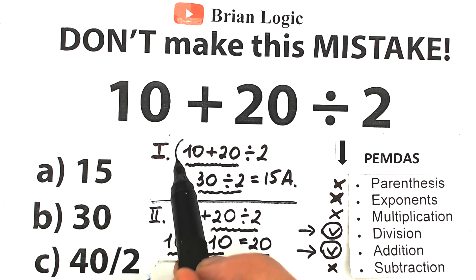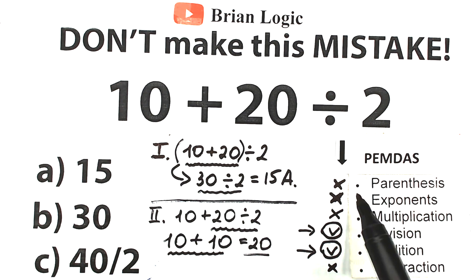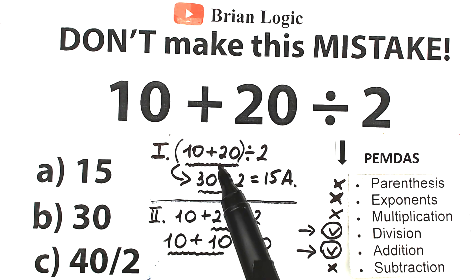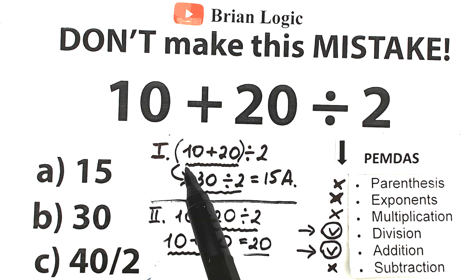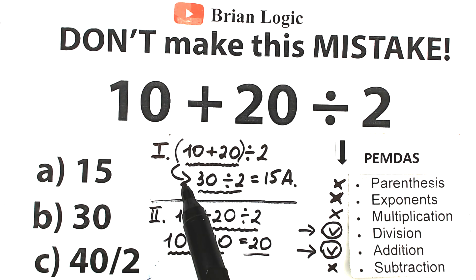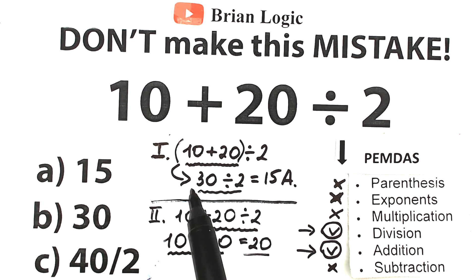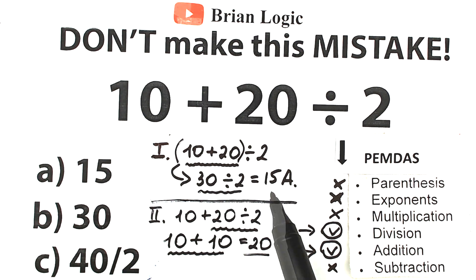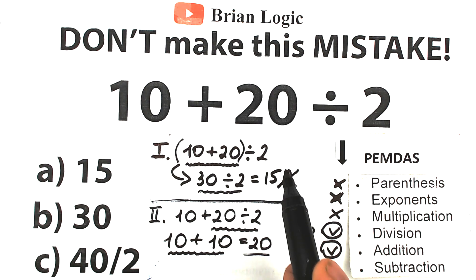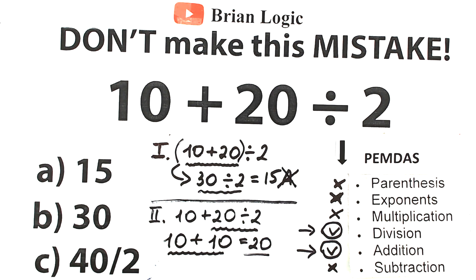With parentheses, this question would work differently, because we should start from the parentheses — they have the highest priority. If we had parentheses around 10 plus 20, we'd evaluate those first: we get 30, then divide by 2, giving 15. So with parentheses the correct answer would be 15. But in our case we don't have any parentheses, so we skip that. Therefore 15 is absolutely the wrong solution here.